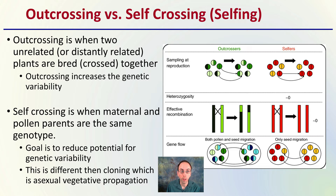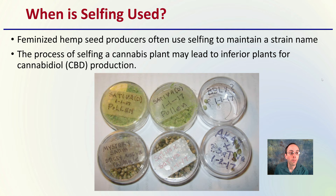When is selfing used in particular? For hemp, feminized seed producers often use selfing to maintain a strain name. However, the process of selfing a cannabis plant may lead to inferior plants for cannabidiol or CBD production. So we're looking at whether using selfing to maintain a strain name will also reduce or negatively impact CBD production.